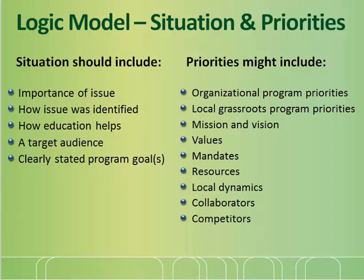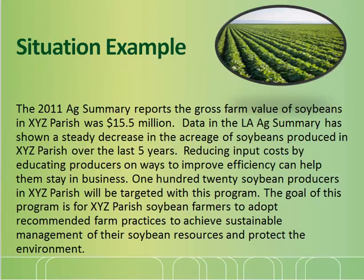Ask yourself: what extension priorities are guiding this program idea? What is our extension mission? What collaborators do we have that would be interested in this program idea? Here's an example of a situation section of a logic model. The 2011 Ag Summary reports the gross farm value of soybeans in XYZ Parish was $15.5 million. Data has shown a steady decrease in the acreage of soybeans produced in XYZ Parish over the past five years. Reducing input cost by educating producers on ways to improve efficiency can help them stay in business. 120 soybean producers in XYZ Parish will be targeted, with the goal of adopting recommended farm practices for sustainable management of soybean resources and protecting the environment.